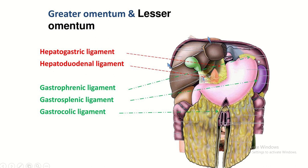This is the greater omentum. This portion is known as the gastrophrenic ligament — you see, one part is attached with the stomach and another part is attached with the diaphragm. This part of the greater omentum, not seen in this picture, is known as the gastroplenic ligament.